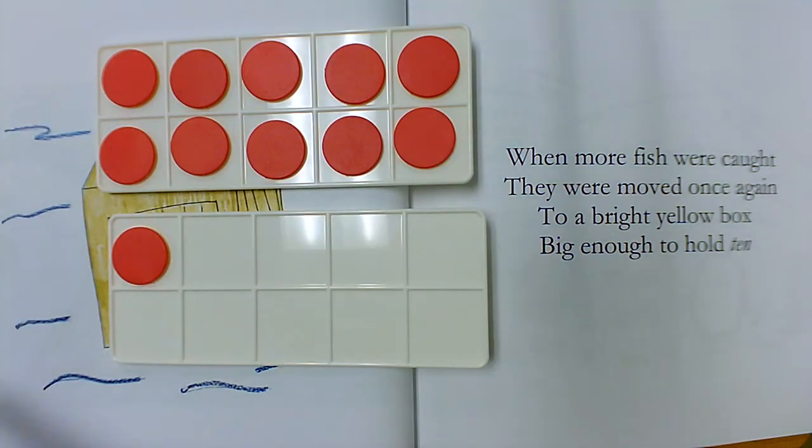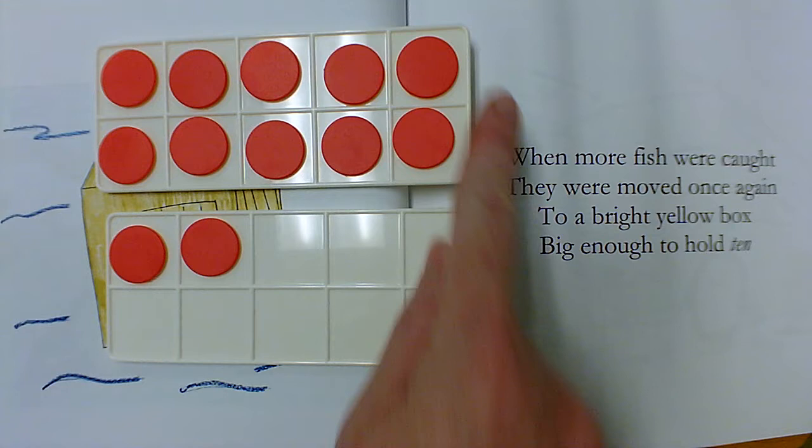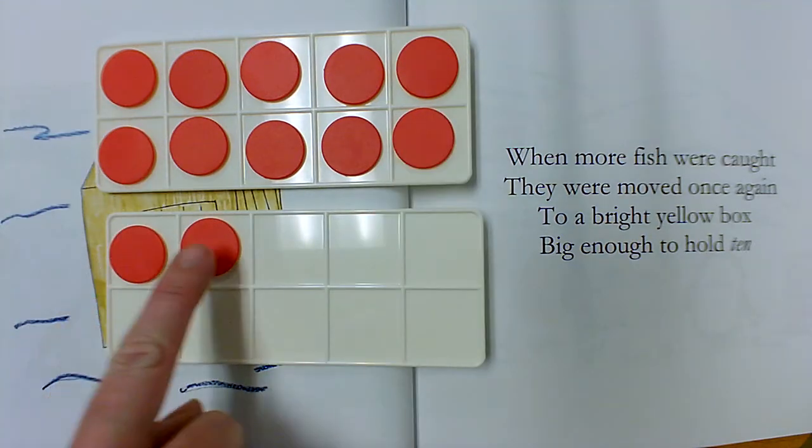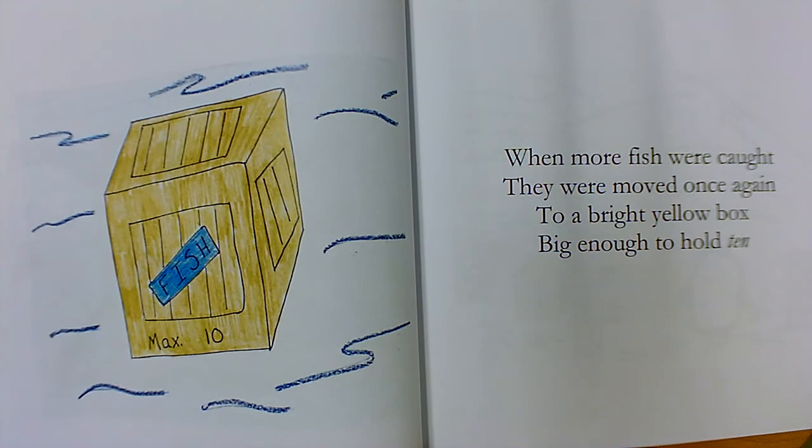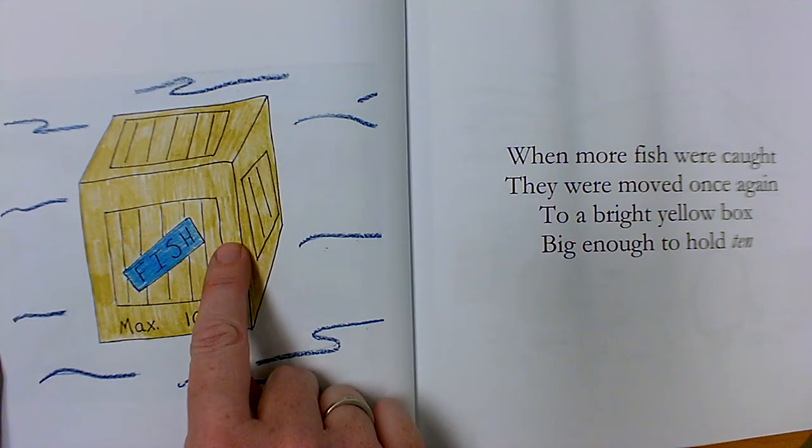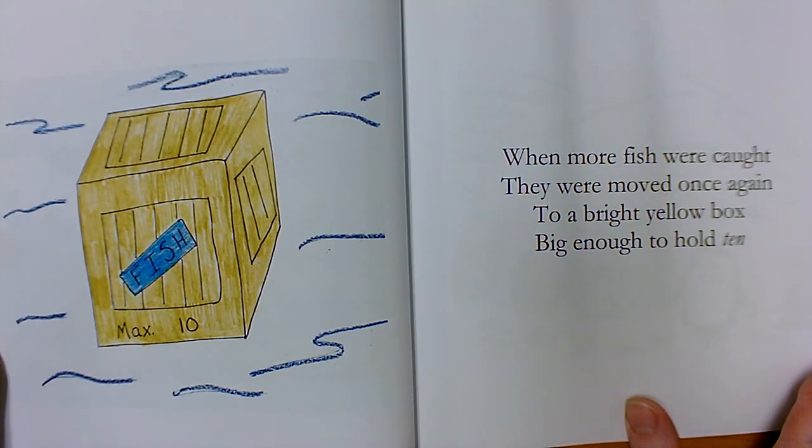10, 11. If it looked like this, I would say 10, 11, 12. So this is like a 10 frame. It's a big bright yellow box, and it's big enough to hold 10.